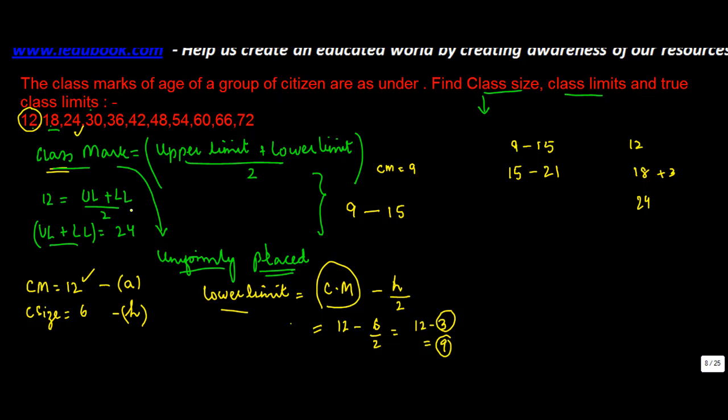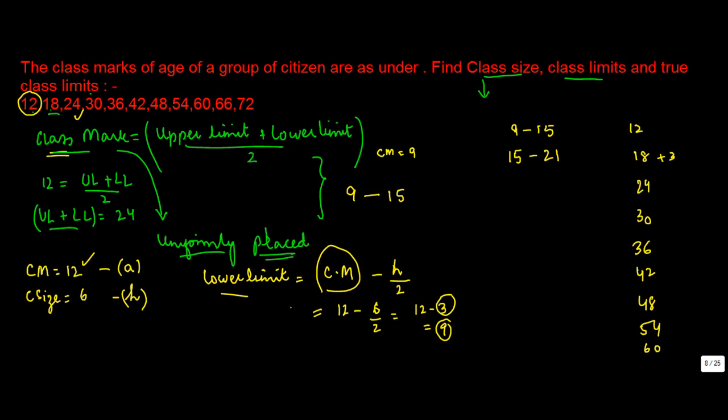Which is this: 30, 36, 42, 48, 54, 60, 66, 72. To get the lower limit, you just subtract 3 on this side. So you get 21 here, and add 3 on the other side, 27. Subtract 3 from this, 27. Add 3 to this, 33. So you can now write down all the class limits.